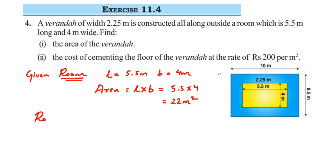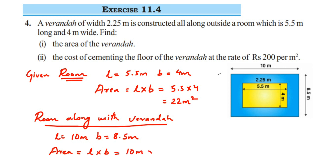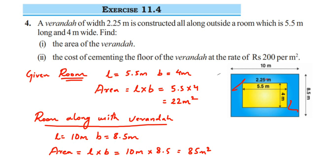Now for the room along with the veranda: the length is 10 meters and the breadth is 8.5 meters. The area is length × breadth = 10 × 8.5 = 85 meter square. To find the area of the veranda, we subtract the area of the room from this total area.